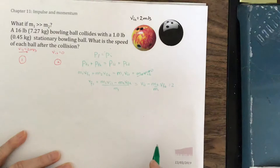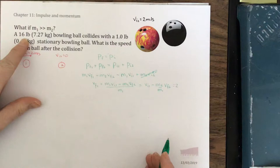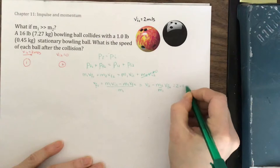m2 over m1. m2 is 1 pound, m1 is 16 pounds, so m2 over m1 is 1 over 16, or 0.0625 vf2. Okay, so there is an expression for vf1.